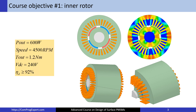Now let's review the properties of the first case study motor. It is an inner rotor motor with distributed winding. The rated output power is 600 watts, the base speed is 4500 RPM, and the rated torque is 1.2 newton-meters.